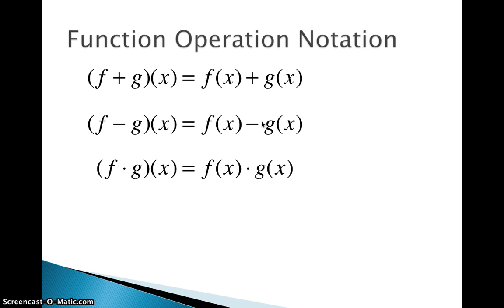f times g of x. You're just going to multiply the two rules together. Use the distributive property if necessary, or FOIL if it's two binomials. And then finally, the only one that's a little tricky is division. So it is simply just putting the f rule over the g rule, if it's f over g of x. But there is that little catch that we have to make sure that whatever's in the bottom, we have to restrict the value of x so that we can't get a zero. Because remember, we cannot divide by zero.